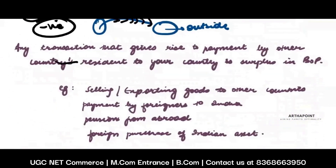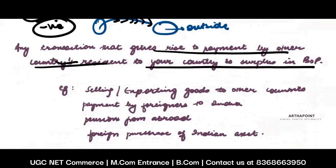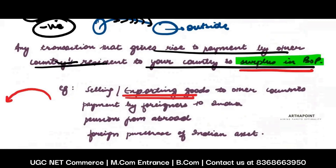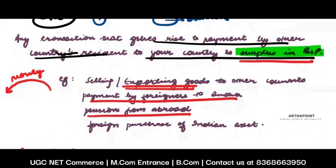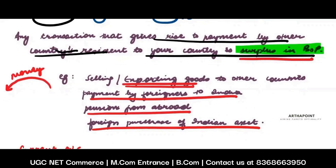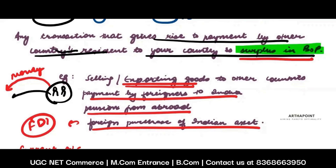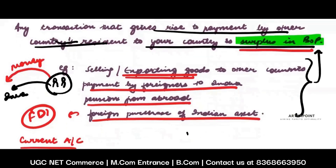Any transaction that gives rise to payment by other countries' residents to your country is a surplus in BOP. When money flows into your country, that becomes a surplus. For example, when you export goods — you are selling to the rest of the world and getting money in return — that is a surplus transaction. When foreigners make payment to India, when there is a pension received from outside India, when there are foreign purchases of Indian assets, when there is foreign direct investment — people outside your country are coming here and investing — then there is a surplus in the BOP. Any transaction in which money inflows into your economy is considered a surplus.